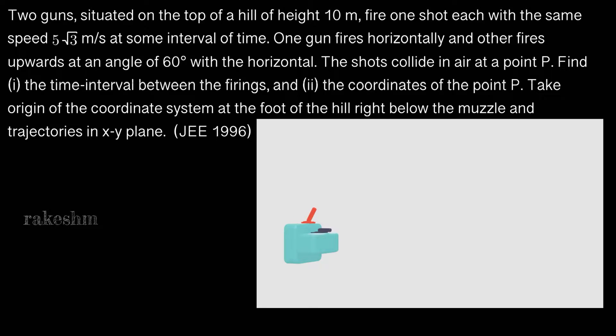Good morning. Let us look at a JEE question from 1996. There are two guns on top of a hill which is 10 meters high. Each gun fires a shot with a speed of 5 root 3 meters per second — one gun at an angle of 60 degrees with the horizontal and the other horizontally. Both shots collide at point P as shown. Let us have a look at the schematic.